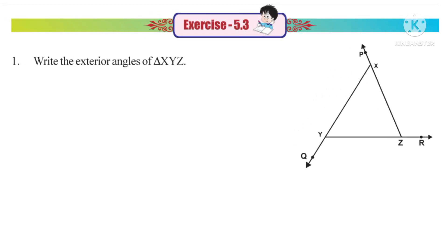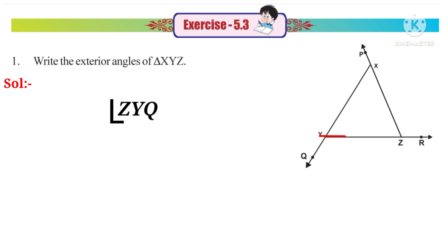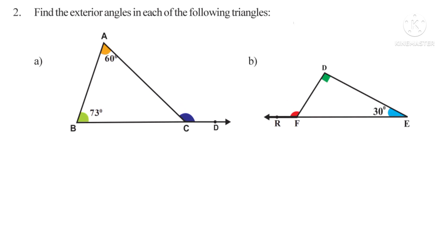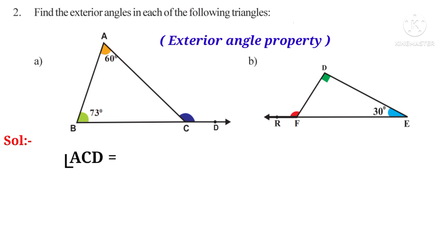Now let us do Exercise 5.3. First problem: write the exterior angles of triangle XYZ. By extending side XY up to Q, the exterior angle is angle ZYQ. By extending side YZ up to R, the exterior angle is angle XZR. By extending side ZX up to P, the exterior angle is angle YXP. Second problem: find the exterior angles in each of the following triangles. Using the exterior angle property, in the first figure, exterior angle ACD equals the sum of interior opposite angles angle A plus angle B, where angle A is 60 degrees and angle B is 73 degrees, giving 133 degrees.